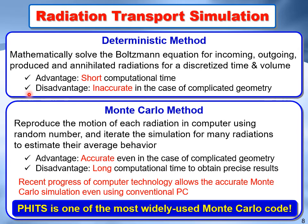In contrast, the Monte Carlo method reproduces the motion of each radiation particle in a computer using random numbers, and iterates the simulation for many particles to estimate their average behavior. Therefore, it is accurate even in the case of complicated geometry, but requires long computational time to obtain precise results because the number of iterations must be very large. Owing to this disadvantage, the Monte Carlo method used to be run only on supercomputers, but recent progress in computer technology allows accurate Monte Carlo simulation even on a conventional PC.